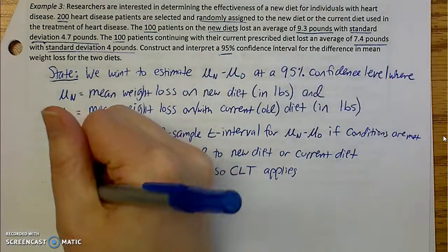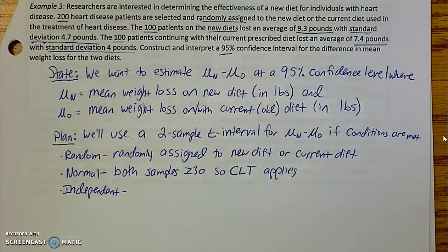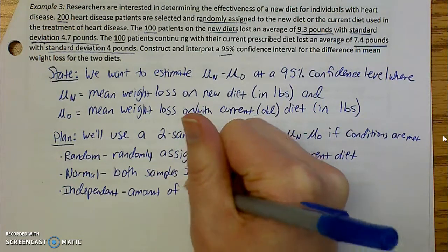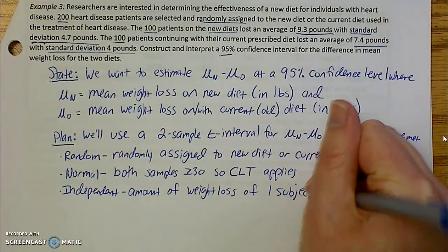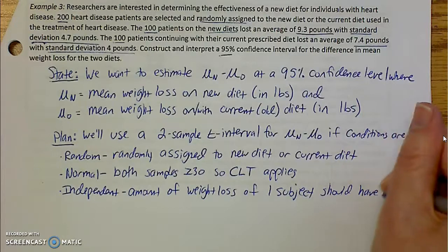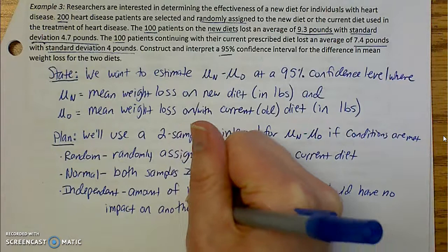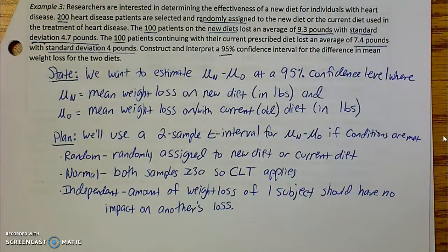Next is independent. So I need to talk about how it's independent amongst the groups and then also amongst the individuals. So I can say that the amount of weight loss of one subject should have no impact on another's loss. And then also the same thing for the groups. Right? One group is independent of the other. I don't need to check my 10% condition because it's an experiment.